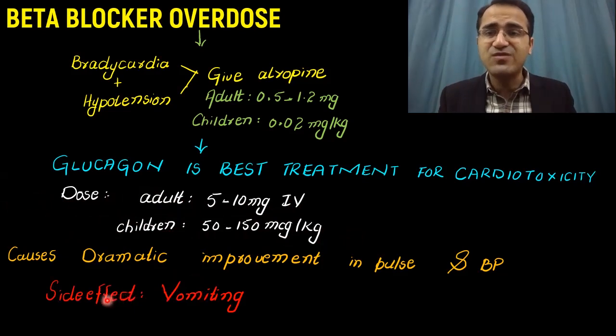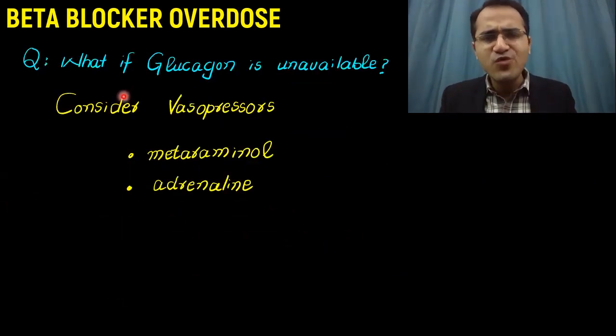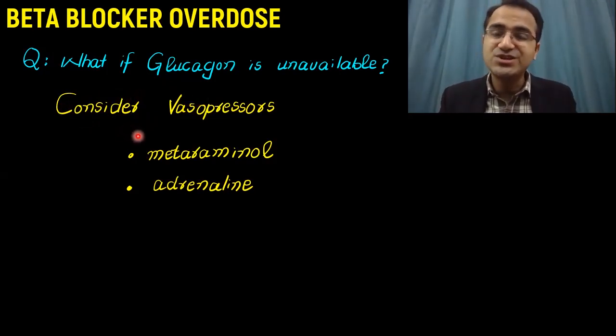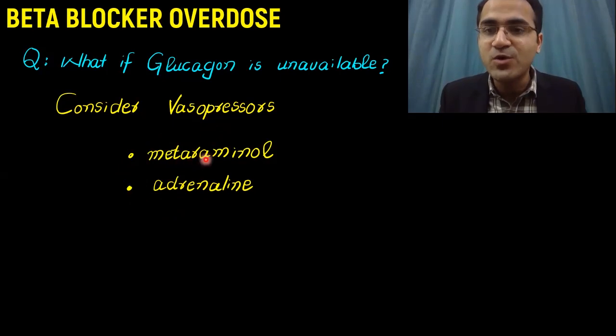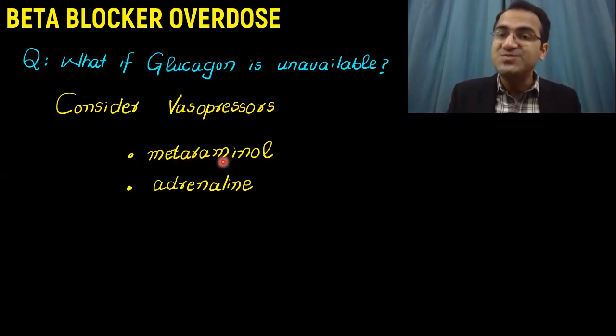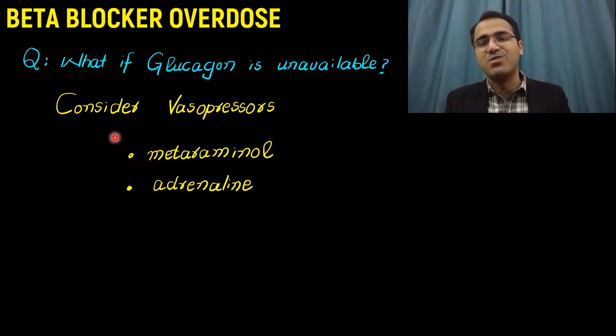The side effects of glucagon include vomiting. What if glucagon is unavailable? You can consider the use of vasopressors, vasopressors like adrenaline and metaraminol. Metaraminol is basically a sympathomimetic drug that causes vasoconstriction and increase in heart rate. Adrenaline and metaraminol can be used if glucagon is unavailable.